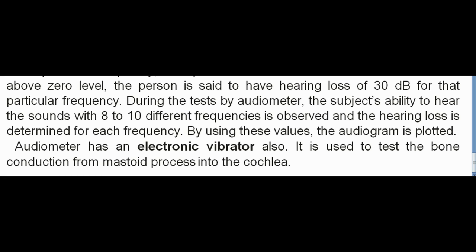During tests by audiometer, the subject's ability to hear sounds at 8 to 10 different frequencies is observed and the hearing loss is determined for each frequency. Using these values, the audiogram is plotted. The audiometer also has an electronic vibrator, which is used to test bone conduction from the mastoid process into the cochlea.